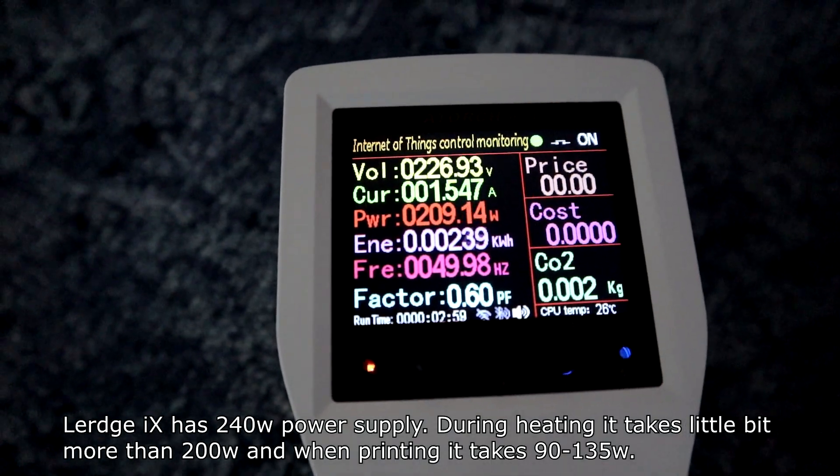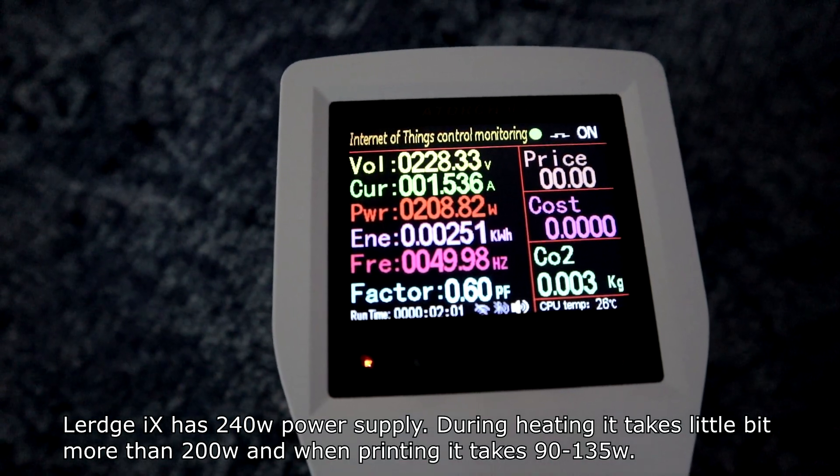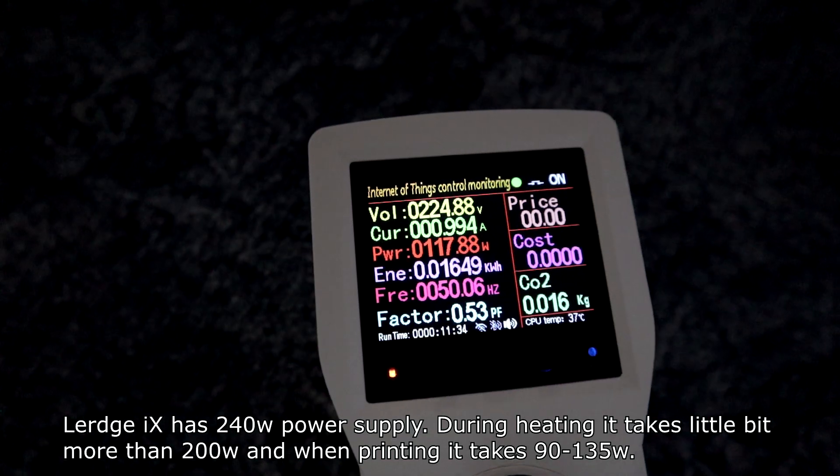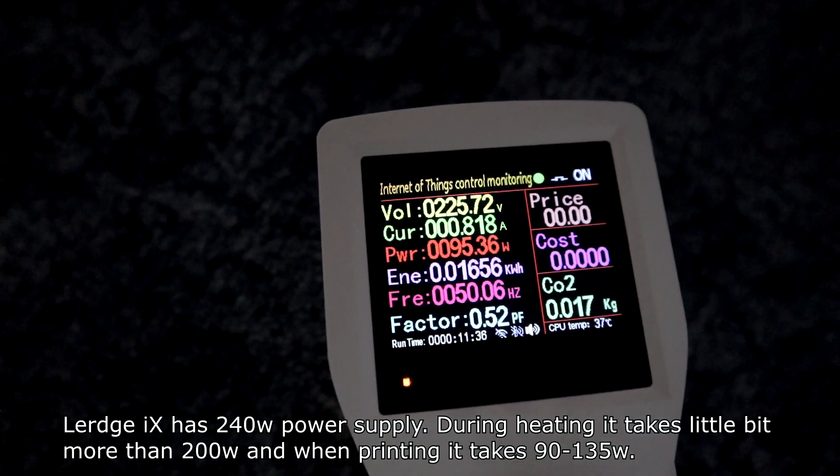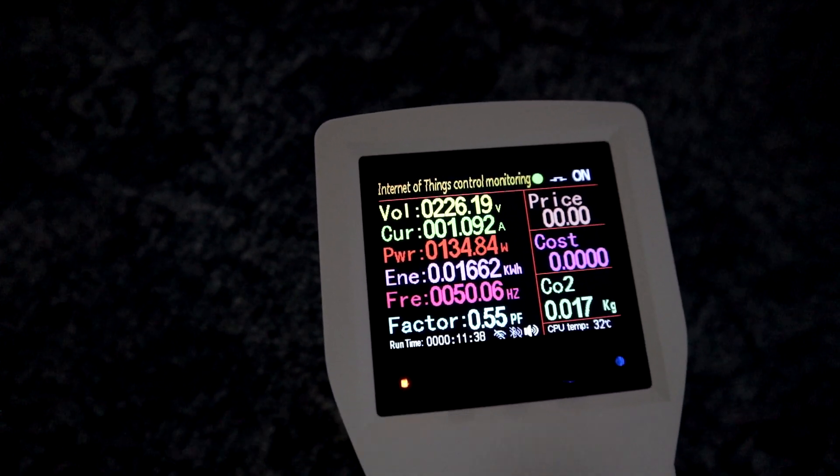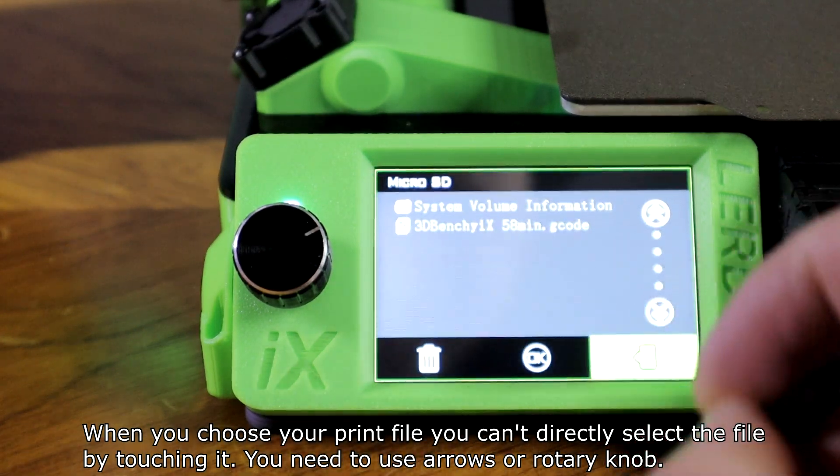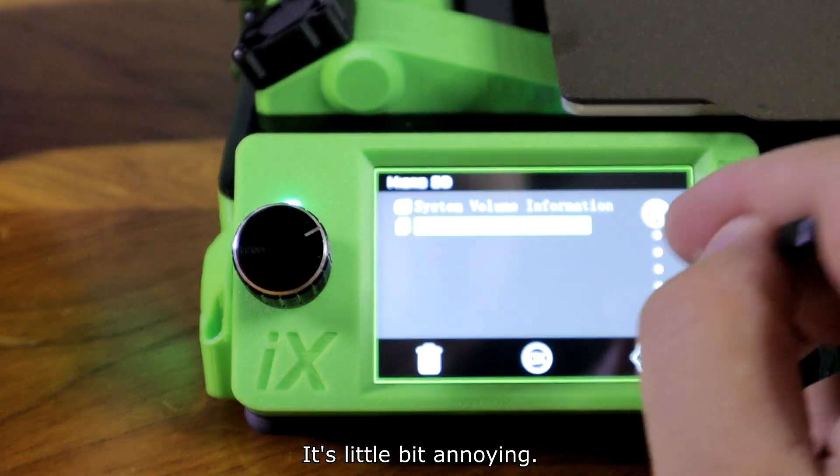Lurch iX has a 240 watt power supply. During heating it takes a little bit more than 200 watts and when printing it takes 90 to 135 watts. When you choose your print file, you can't directly select the file by touching it. You need to use arrows or rotary knob. It's a little bit annoying.